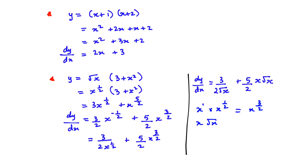Let's do two more examples. Here we have y = (x + 1)(x + 2). First expand the bracket: x × x = x², x × 2 = 2x, 1 × x = x, and 1 × 2 = 2. Adding 2x + x gives 3x, so y = x² + 3x + 2. Now differentiate: dy/dx = 2x + 3. The constant 2 differentiates to 0.